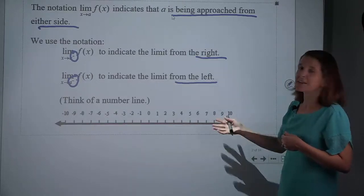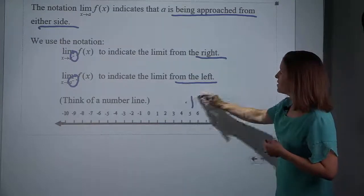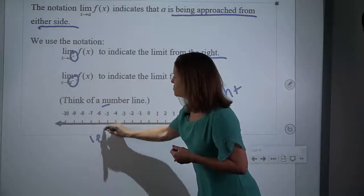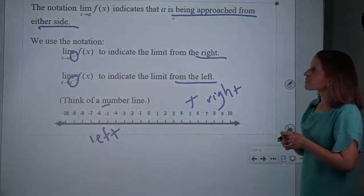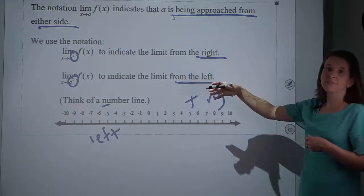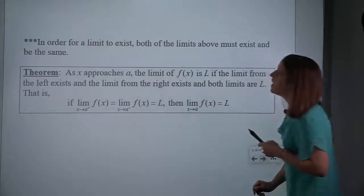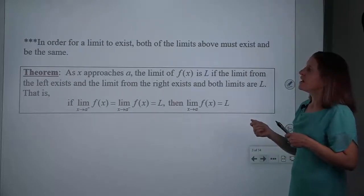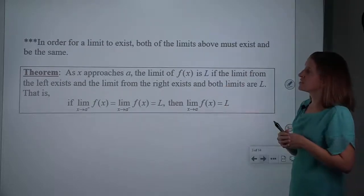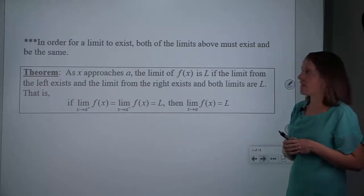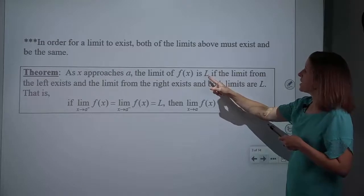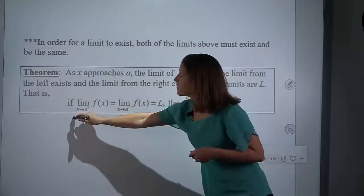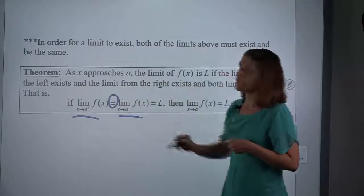Where does that notation come from? It comes from the number line: the positives are to the right of zero and the negatives are to the left of zero. We need to check from the left and from the right because in order for a limit to exist, both of the limits have to exist and be the same. The theorem says: as X approaches A, the limit of f of X is L if the limit from the left exists and the limit from the right exists and they are equal.